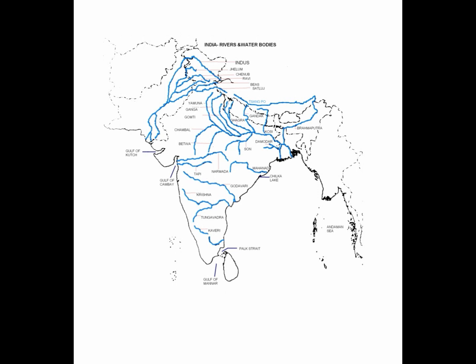A quick recap of all 10 rivers and their tributaries: from the south — Kaveri; Krishna with tributary Tungabhadra; Godavari; Tapi; Narmada; Indus with tributaries north to south: Jhelum, Chenab, Ravi, Beas, Satlaj; Ganga (river number 7) with northern tributaries left to right: Yamuna, Ganga, Gomati, Ghagra, Gandak, Kosi; southern tributaries: Chambal, Betwa, Son; Brahmaputra (number 8), called Tsangpo outside India; Damodar (number 9); and Mahanadi (number 10). That gives you 23 rivers in total.